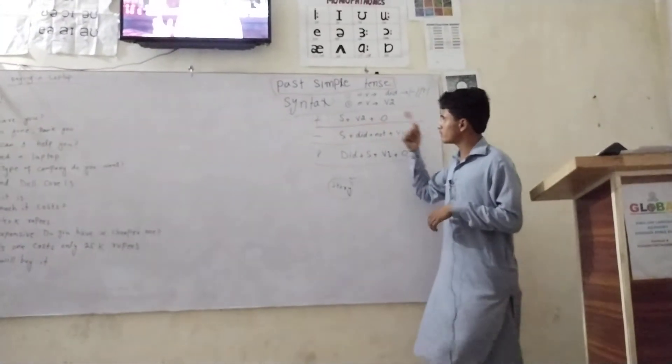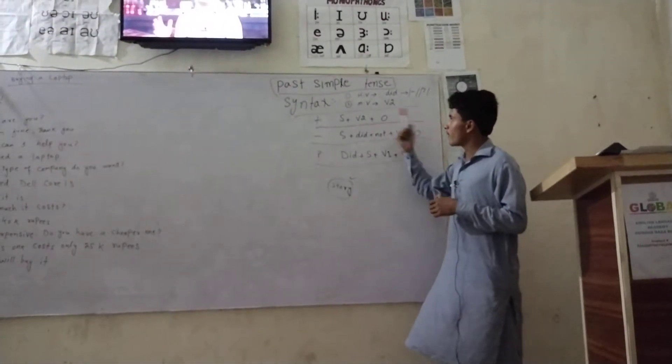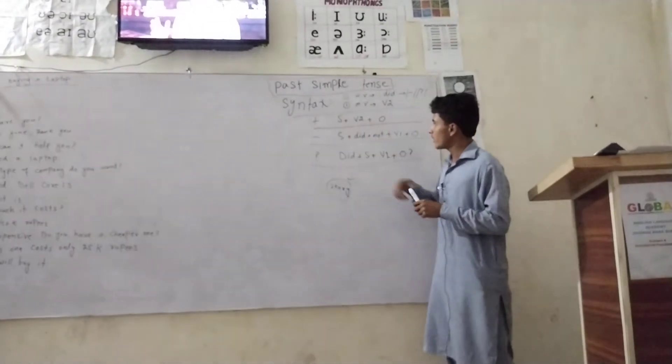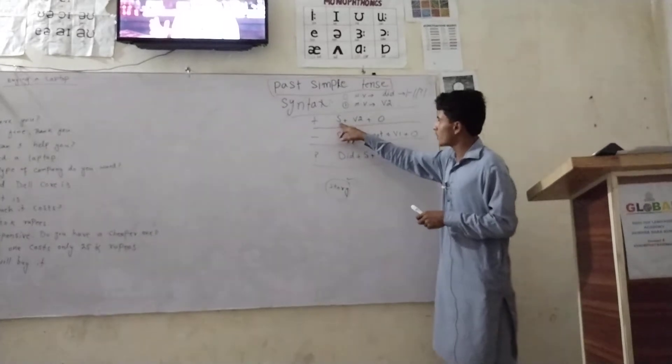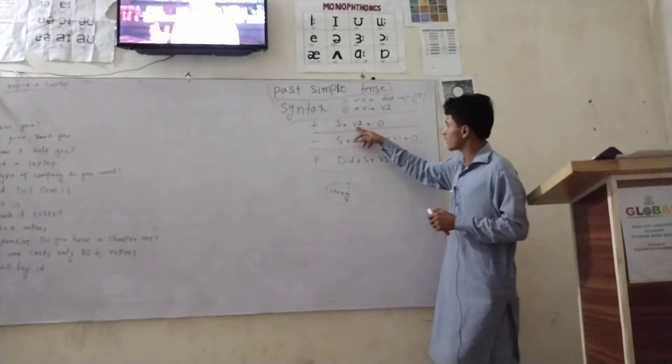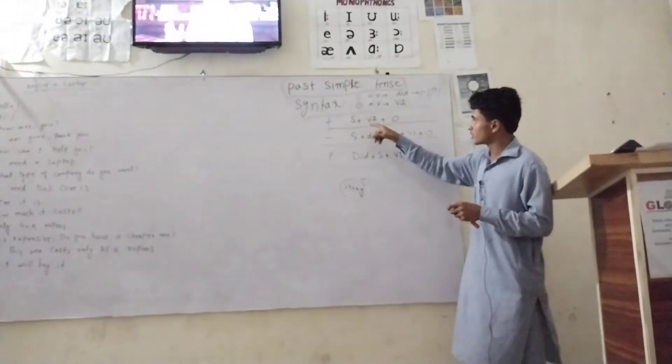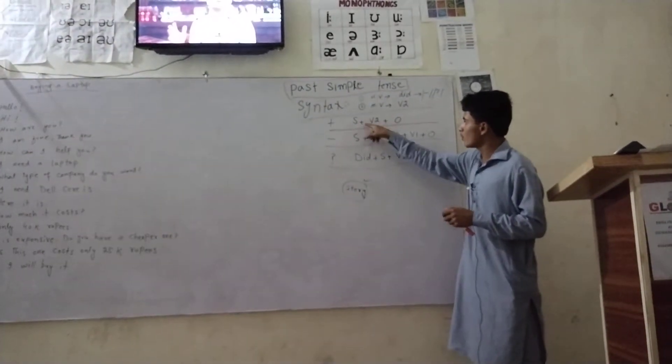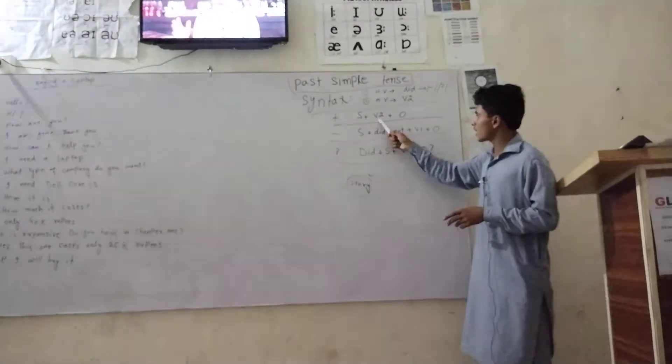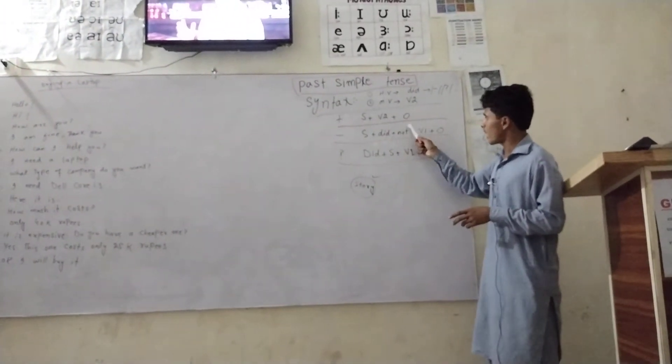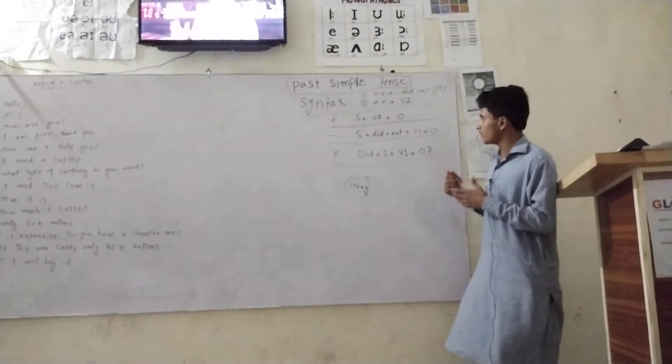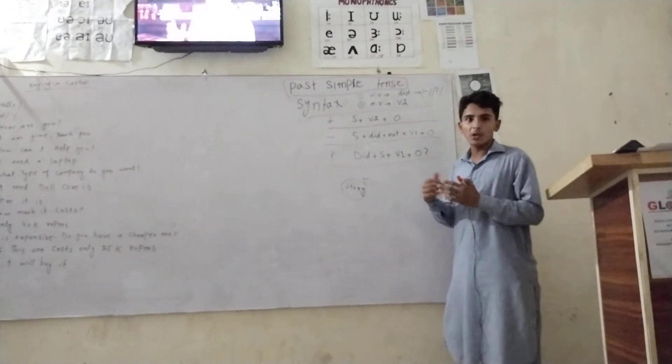After that, how to make positive sentences in past simple tense. I want to take some examples. First we write the subject - I, he, she, they. These are subjects, and after this, the second form of the verb. In positive sentences, I told you there is no helping verb. It's second form of the verb plus object. For example: I ate the meal. I wrote a story.